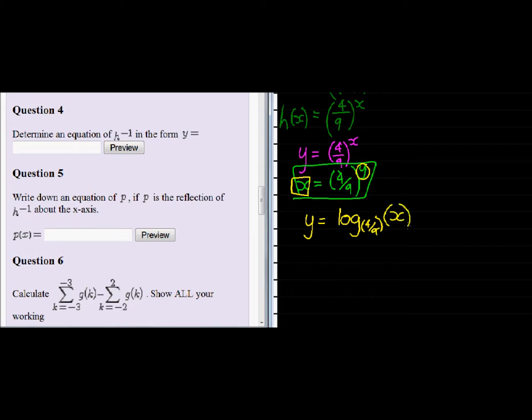Okay, now the way we're going to type it in, because the program can't recognize that format, is we're going to type it in as log of x divided by log of the base 4 over 9. That's how we're going to type it in.